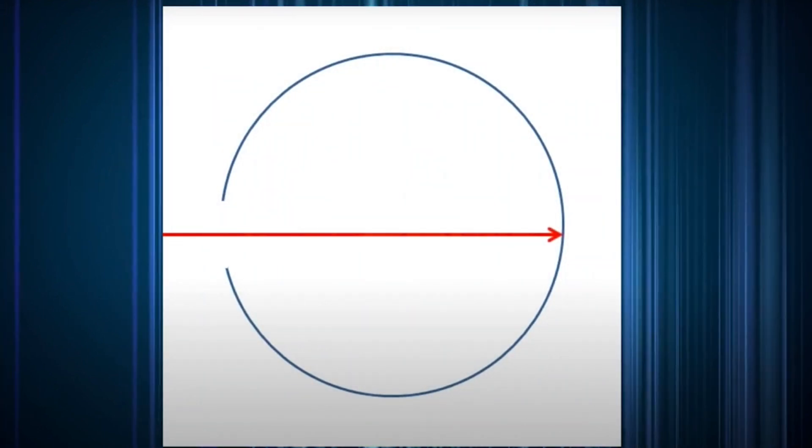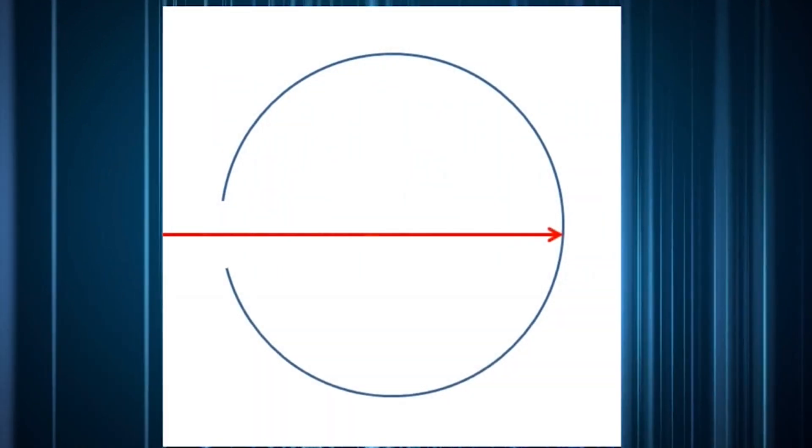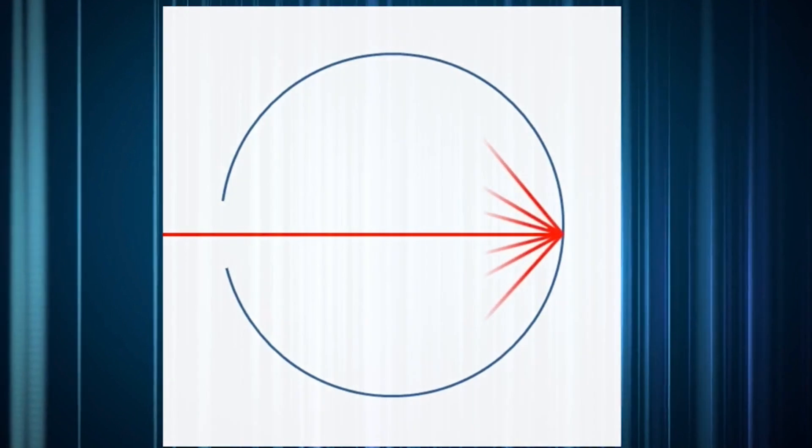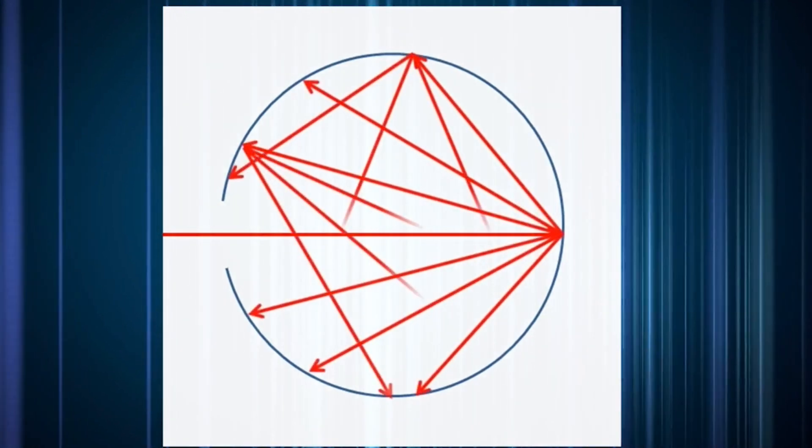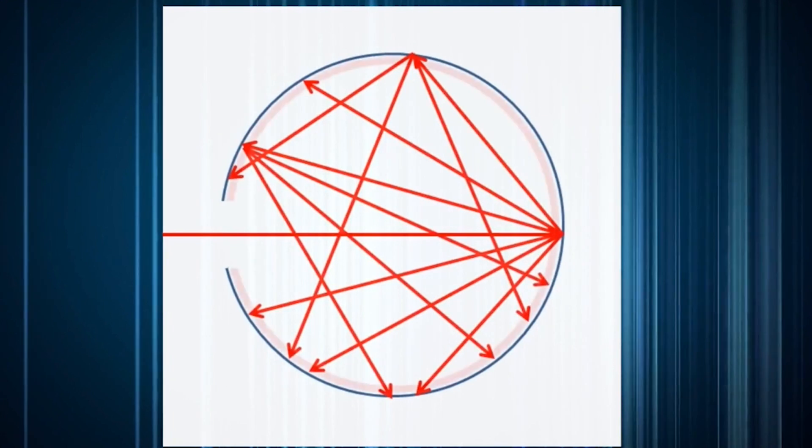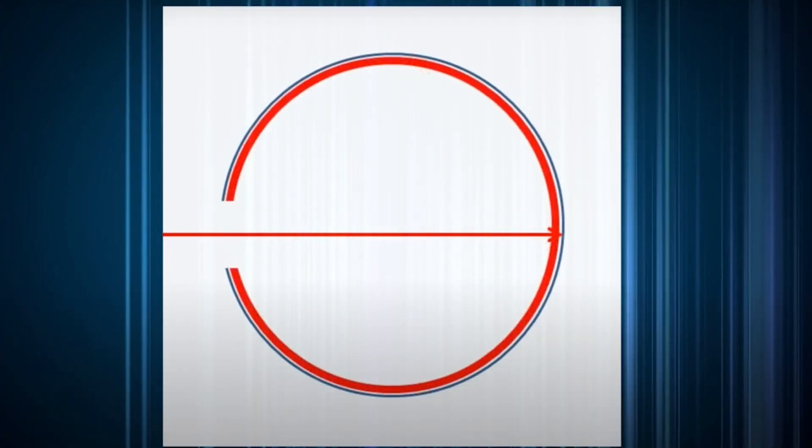An integrating sphere is essentially a hollow sphere whose inner surface is white, very diffuse, and very reflective. Incoming light is bounced around inside the sphere so that it gets uniformly distributed throughout the sphere's inner surface.